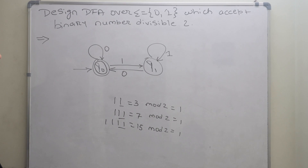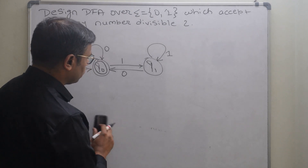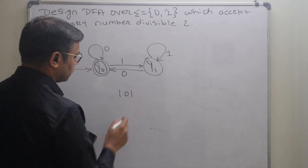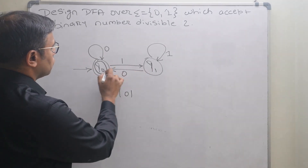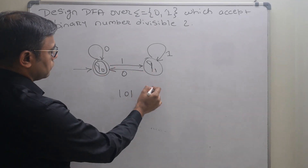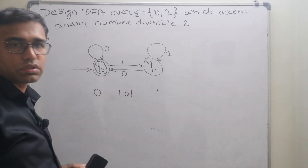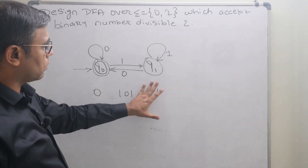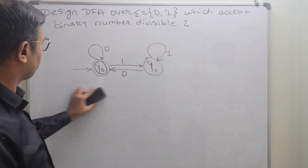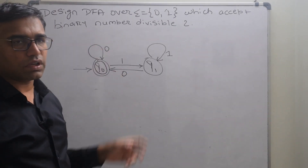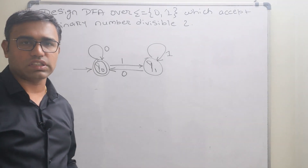If we take 101, that is 5 in decimal, and 5 mod 2 is 1, so we end in q1, which represents remainder 1. This confirms our transitions are correct. This is how we construct the deterministic finite automata which accepts binary numbers divisible by 2. That's it for this video — I do hope you understand this question.